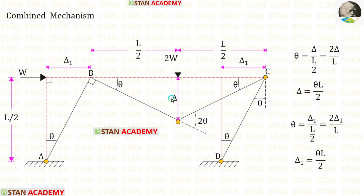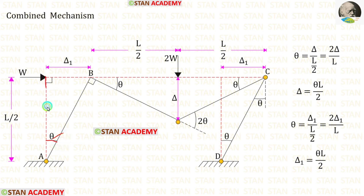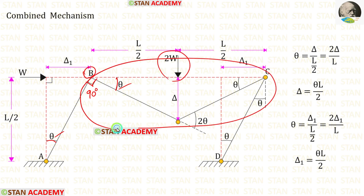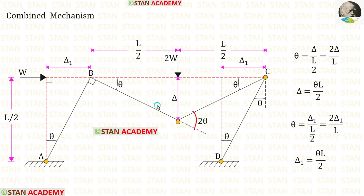Let us keep the beam displacement as delta and the sway displacement as delta 1, and the angle as theta. Since both columns have the same height L/2, the column angles are all theta. At joint B the angle from the beam side is theta and the sway side is theta. Since the point load acts at the center we have a symmetrical triangle, so the mid-span angle is theta plus theta, giving 2 theta.